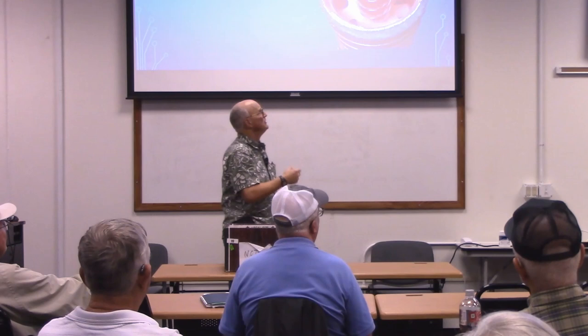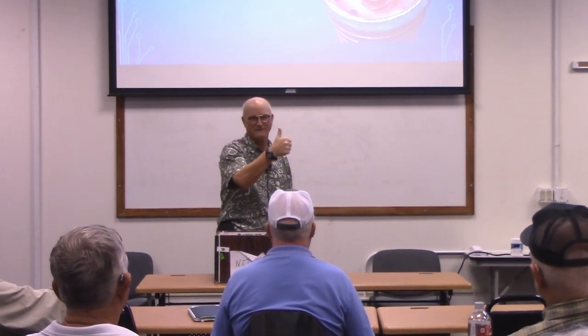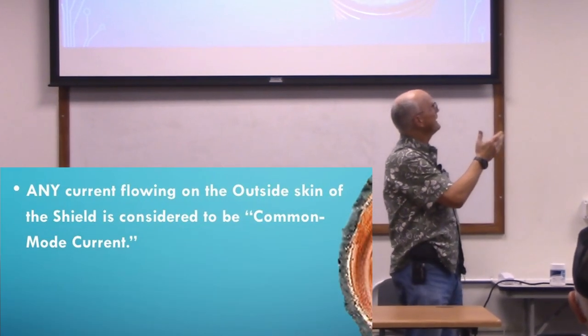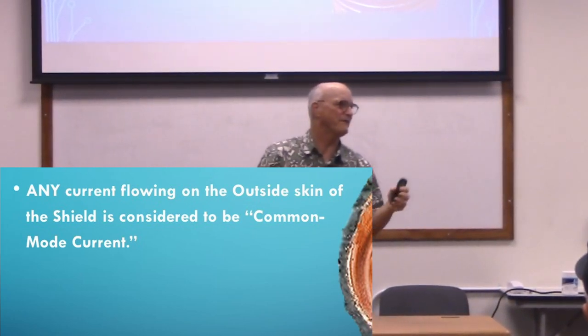What's even more remarkable is that the inside skin of the shield and the outside skin of the shield act virtually independently of one another. The nature of coaxial cable dictates that the current running through the center conductor equals the current running on the inside skin of the shield. If there's any difference at the load end, that current has to go somewhere. Any current flowing on the outside skin of the shield is what we refer to as common mode current — that's where the difference current flows.